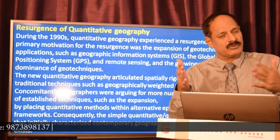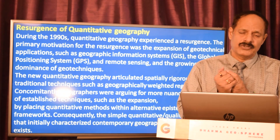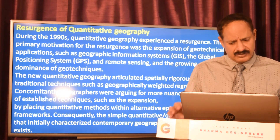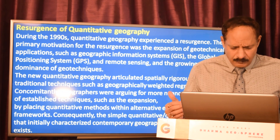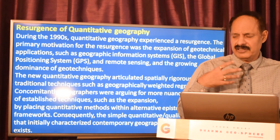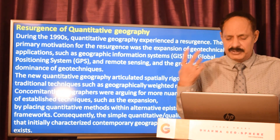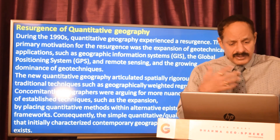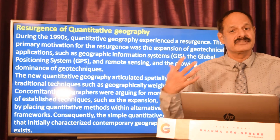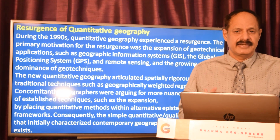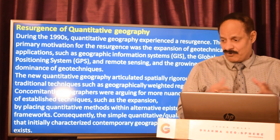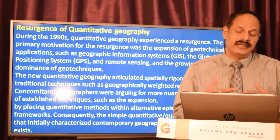After tapering off post the 60s due to these drawbacks, there was a resurgence in the 90s. The primary motivation was the expansion of geotechnical applications, particularly Geographic Information Systems, GPS, and remote sensing, and the growing dominance of geotechnics worldwide. Geography had no other option but to adopt these modern geotechnical methods. GIS is so important — you can see geographical landforms and physical landscapes in three dimensions and it is very easy to analyze and predict.